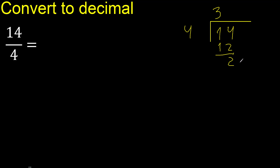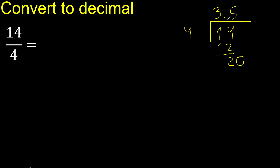There is no number that goes down, therefore complete — always complete with 0. Here, add a decimal point. We now have 20. 4 multiplied by which number? Multiplied by 5 is exactly 20. Ok, 20 is not greater.